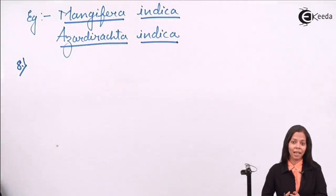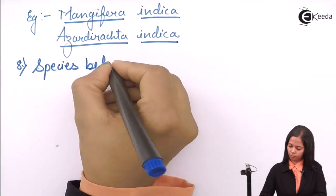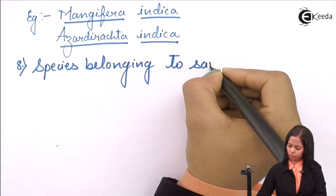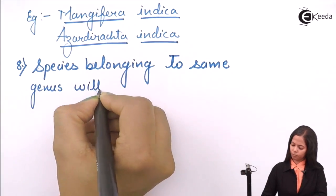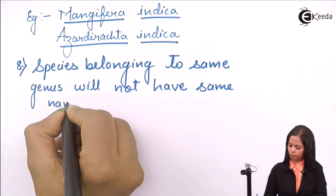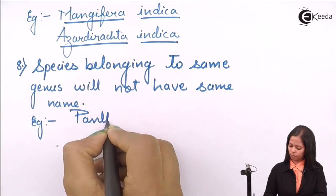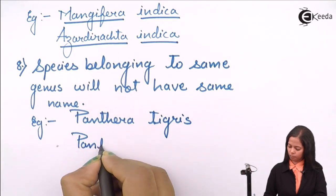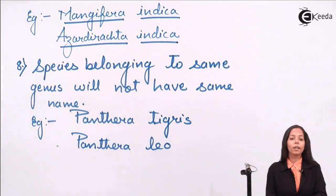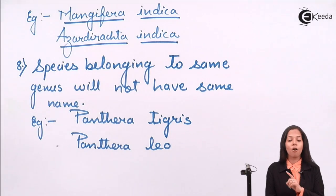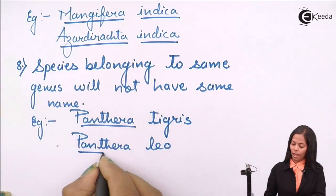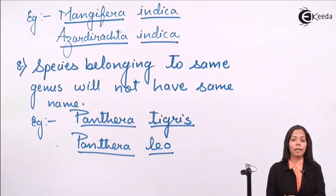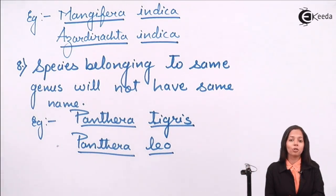For example, species within the genus Mangifera will not have the same species name. Another example: Panthera tigris and Panthera leo — Panthera is the genus name, tigris means tiger and leo means lion. Tiger and lion belong to the same genus Panthera, but their species names are different.